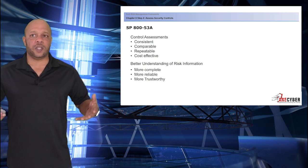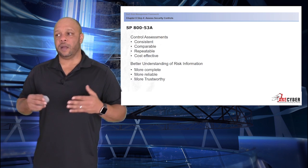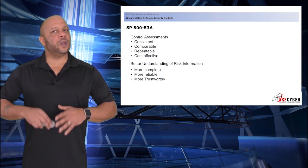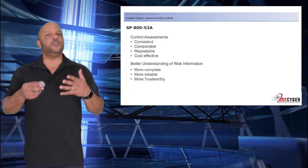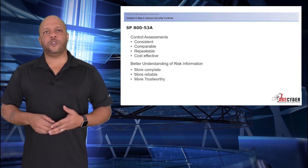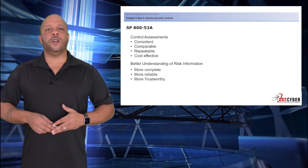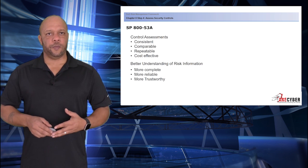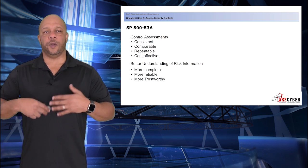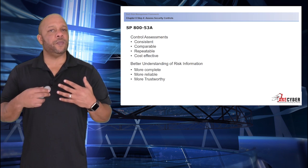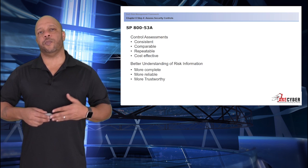The guide for assessors would be the 853A — A for assessment. It gives control assessors specific guidance on how to perform each risk assessment. The assessment itself must be consistent and comparable, repeatable, and cost-effective to better understand the full risk to the information system. By making it comparable and repeatable, the hope is that a more complete, reliable, and trustworthy risk assessment is being performed.